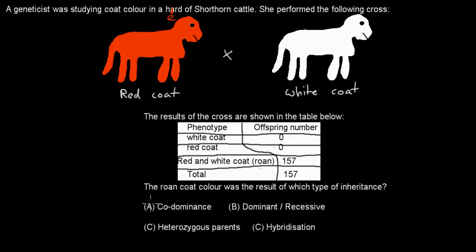Welcome back. In this case, it's co-dominant because we have a red coat and a white coat, and the result will be R white. That's a roan coat. And all of them are roan coats. So these must be homozygous red and homozygous white coming together and making a mixture between the two. And that only happens in co-dominance. Dominant recessive, that would not be the case. There would be no mixing between colors. Heterozygous parents, again, if they were heterozygous, that would be impossible. They have to be homozygous for that to happen. Hybridization is just unrelated to this idea. So A is correct.